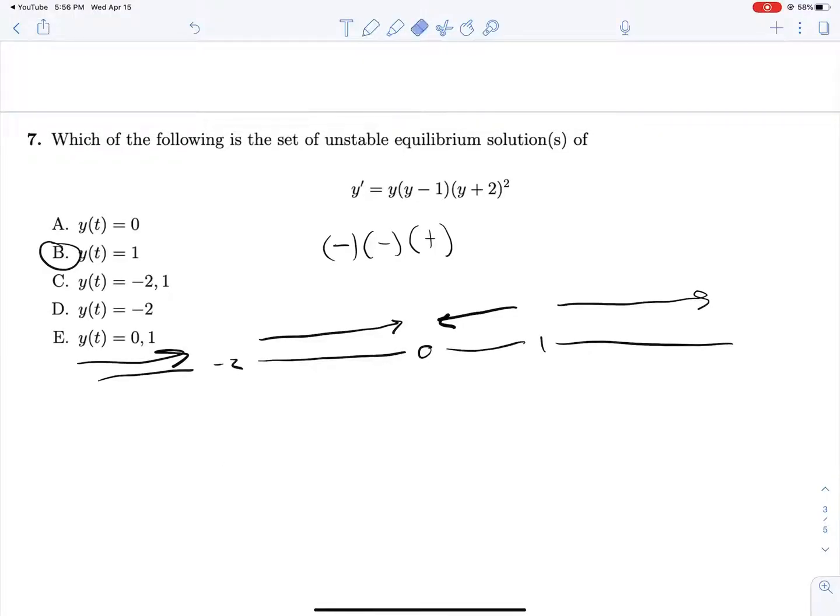This solution would be called semi-stable because it's stable from one side over here, but it's unstable from another side.